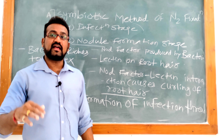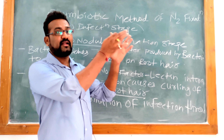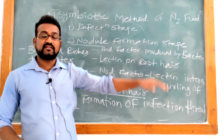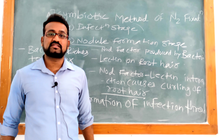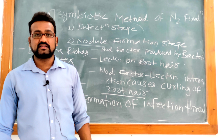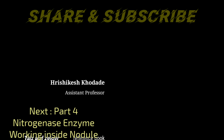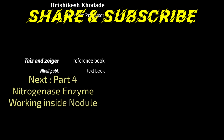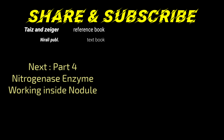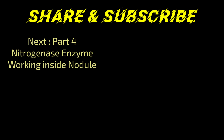In the next lecture we will discuss what happens inside this nodule so that these bacteria can take Nitrogen and create a usable form and give it to the plant, because Nitrogen is in air, bacteria are in root, roots are in soil - so how this takes place is a discussion point in the next lecture. Thank you.